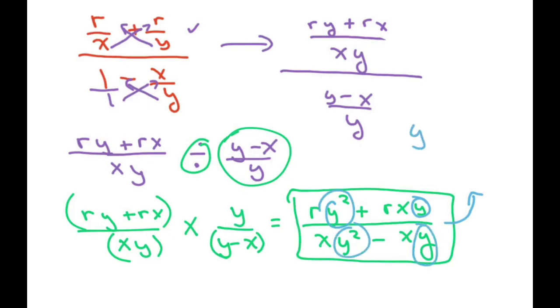So, I'm going to factor out a y and I get ry minus rx. And in the denominator, I can factor out a y and I get xy minus x. In that case, the y's cancel. So, there is your final answer. My apologies.